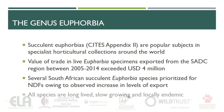The genus Euphorbia is well known for its remarkable diversity of growth forms and species, particularly amongst the succulent euphorbias which are popular in horticultural collections around the world. Trade in succulent euphorbias is regulated under CITES and several South African species have been prioritized for NDFs owing to observed increases in the levels of export over the years. All species presented here are long-lived, slow-growing, and endemic.